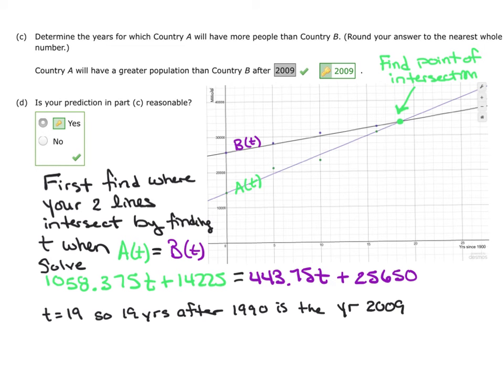When determining the years for which Country A will have more people than Country B, we first need to find the part where the two lines are intersecting. So you could do this by putting these equations in Y1 and Y2 into your calculator and finding the point of intersection that way, or just by setting the two equations equal to each other and solving for T. So if you set this equation equal to B(T) and solve for T, you'll end up with T = 19. So that means 19 years after 1990 is the year 2009.